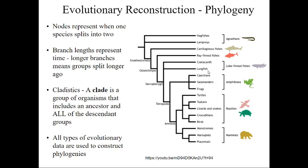Amphibians would also be a clade. But fish is not a clade, because if we try to find their ancestor, we have to put all of vertebrates in there together. So vertebrata — that's a clade.